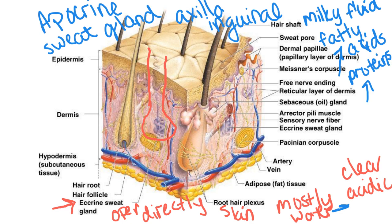Two types of sweat glands — apocrine and eccrine — you need to be comfortable with their different locations, what they do, and the differences between the two.